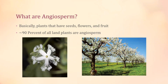So what are angiosperms? These are basically plants that have seeds, flowers, and fruit. If you have the time, I would recommend going back and looking at seeds and thinking about what different characteristics and adaptations seeds have. Because angiosperms have all these different adaptations — seeds, flowers, fruit — they're actually the most widely spread plant. In fact, 90% of all land plants are angiosperms.